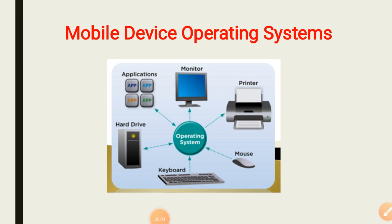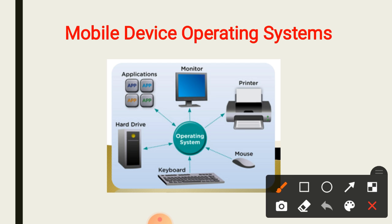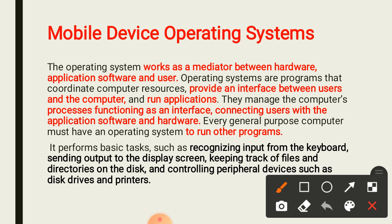Today's topic is mobile device operating systems. In a computer operating system, the OS is connected to all the hardware and software resources — hard devices, applications, monitor, printer, mouse, keyboard. The operating system works as a mediator between the hardware and the application software and the users, and it provides an interface between the user and the computer to run applications.